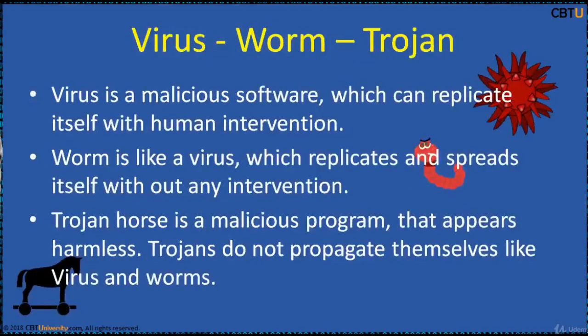Let's look at the tiny difference between Virus, Worm, and Trojan. A Virus is malicious software which can replicate itself with human intervention. A Worm is like a Virus which replicates and spreads itself without any intervention. A Trojan Horse is a malicious program that appears harmless but is not.